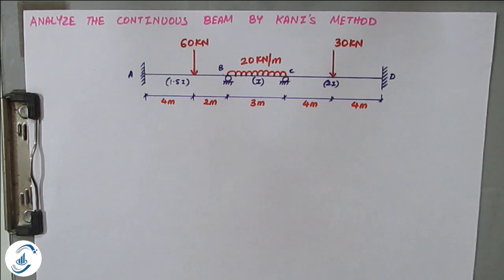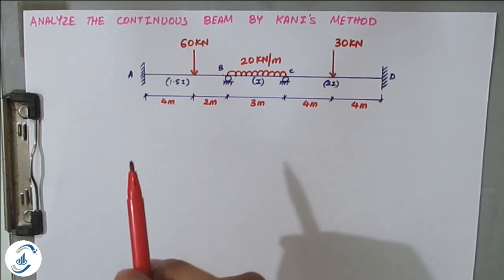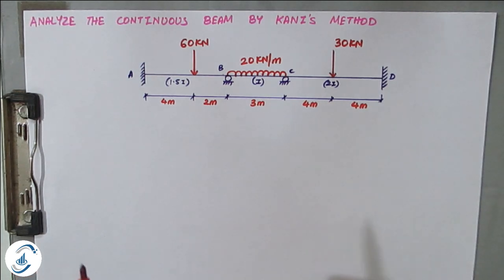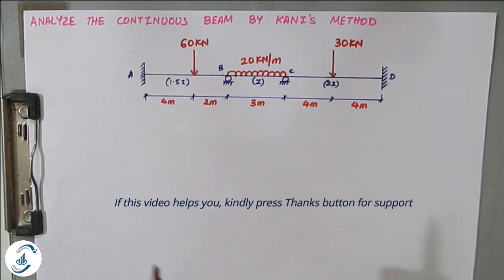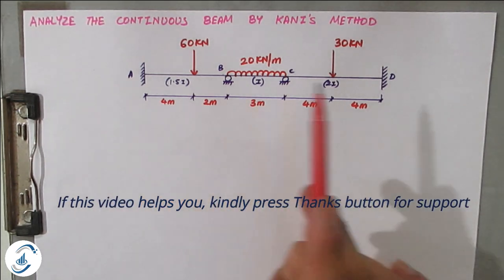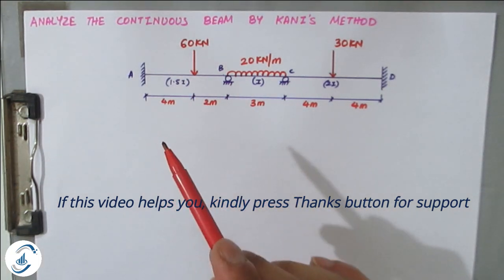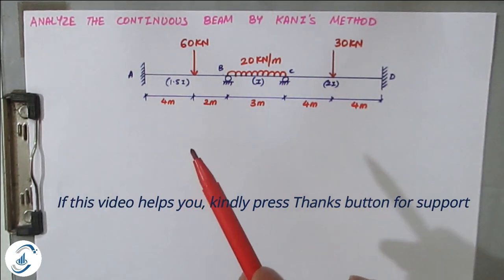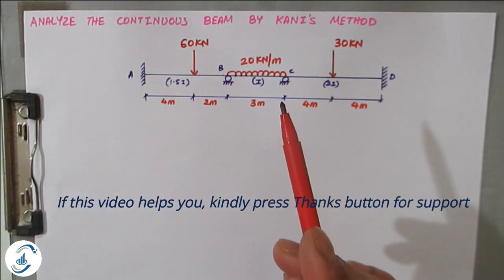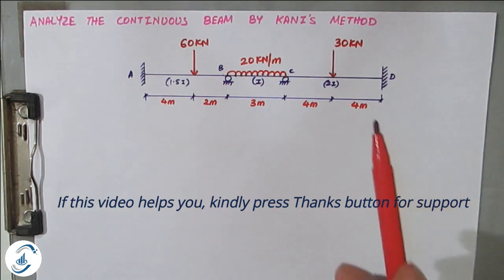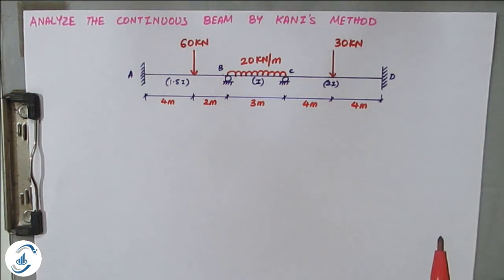Hello friends, welcome back to All About Structural Analysis and Design. In this particular problem we will solve an indeterminate beam with the help of Kani's method. In my previous lectures I have explained slope deflection method and moment distribution method. This is the third type of method to analyze indeterminate structures. The given beam has both ends fixed with a point load and UDL loading pattern. The first step is to calculate fixed end moments.